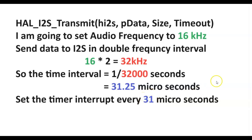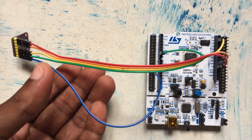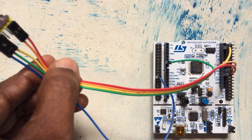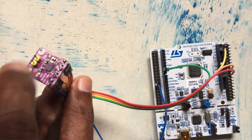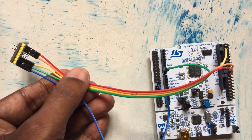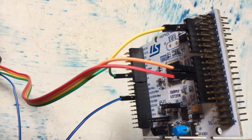In CubeIDE I will show you how to do it. Over the wiring diagram: VIN to 5V, ground to ground, DIN to PC1, BCLK to PB10, LRC to PB12. The wiring connection is here — the module here — and here we connect the speaker. These two pins connect the speaker, and the Nucleo power and ground.